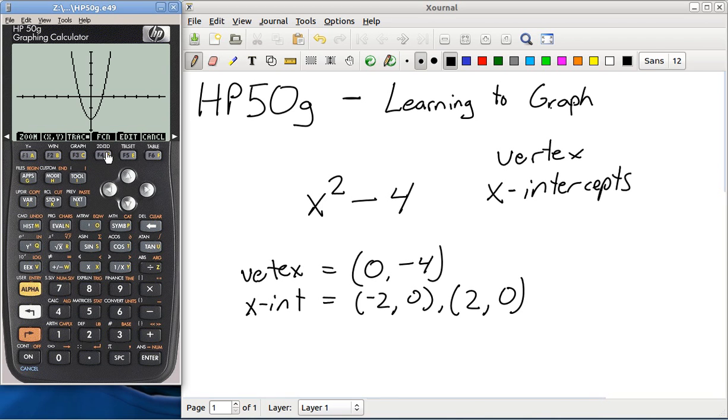Now there's other ways of finding this out, too. You can go right here under the function folder, F4, and hit the EXTR button, which stands for extremes, F6. You see the extreme here. It's looking for extreme high or extreme low. In this case, there's an extreme low at the bottom of this parabola of 0, negative 4. So that's another way you can find your vertex.